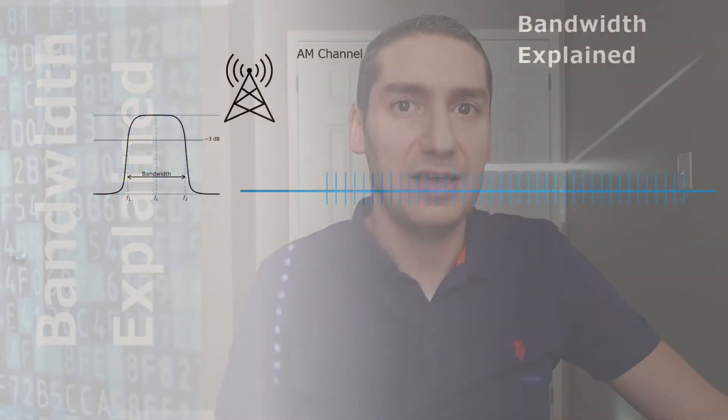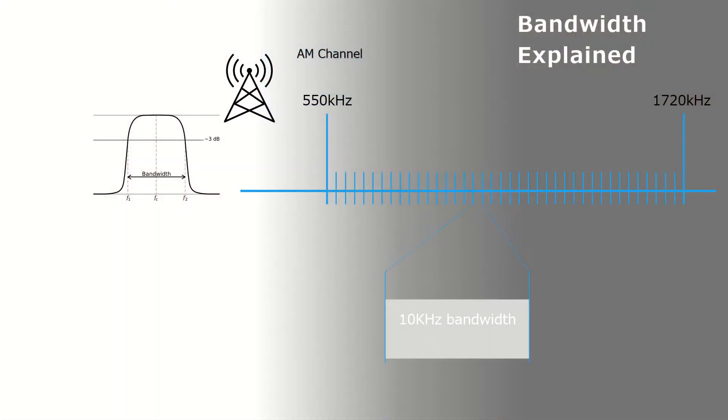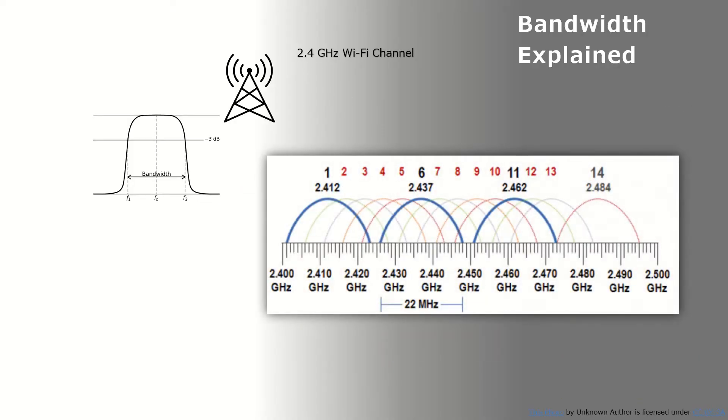Let's take an AM channel. The AM radio band is between 550 kilohertz and 1720 kilohertz, and the bandwidth for each channel is 10 kilohertz. So each channel has 10 kilohertz of frequency dedicated to it for transmission. This is what is meant by bandwidth — the width of the band where an AM channel is allowed to transmit.